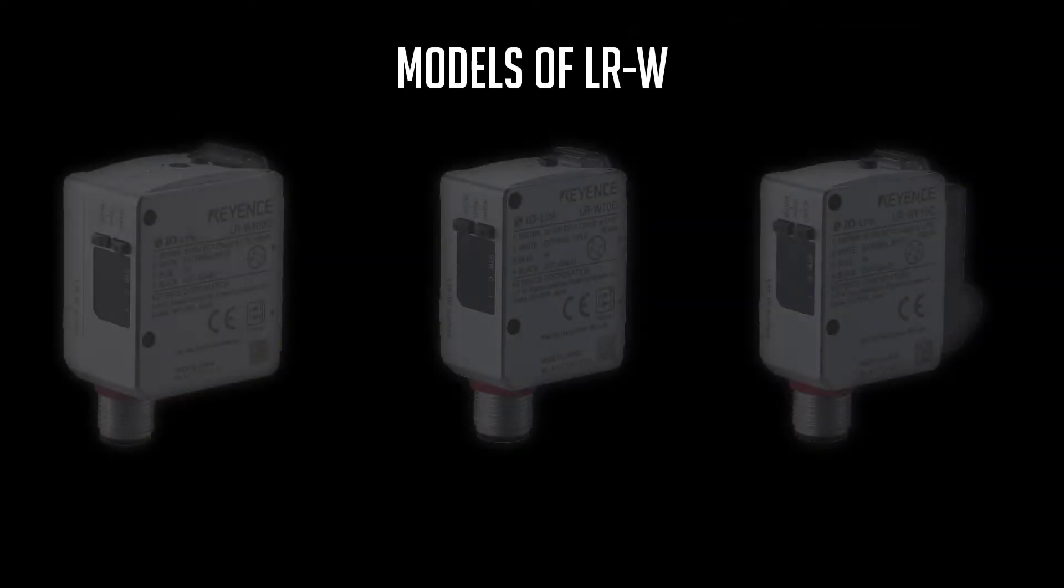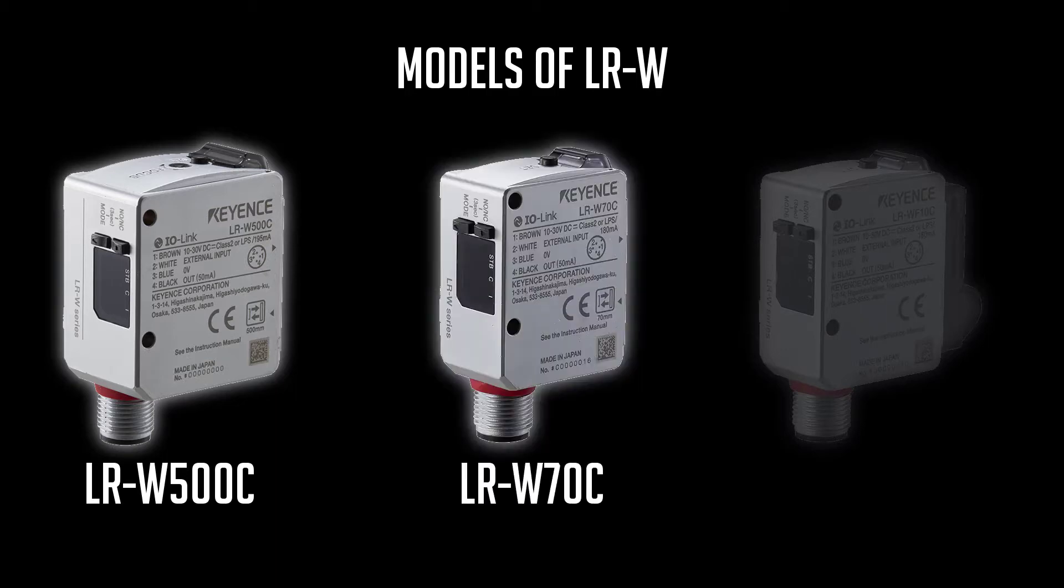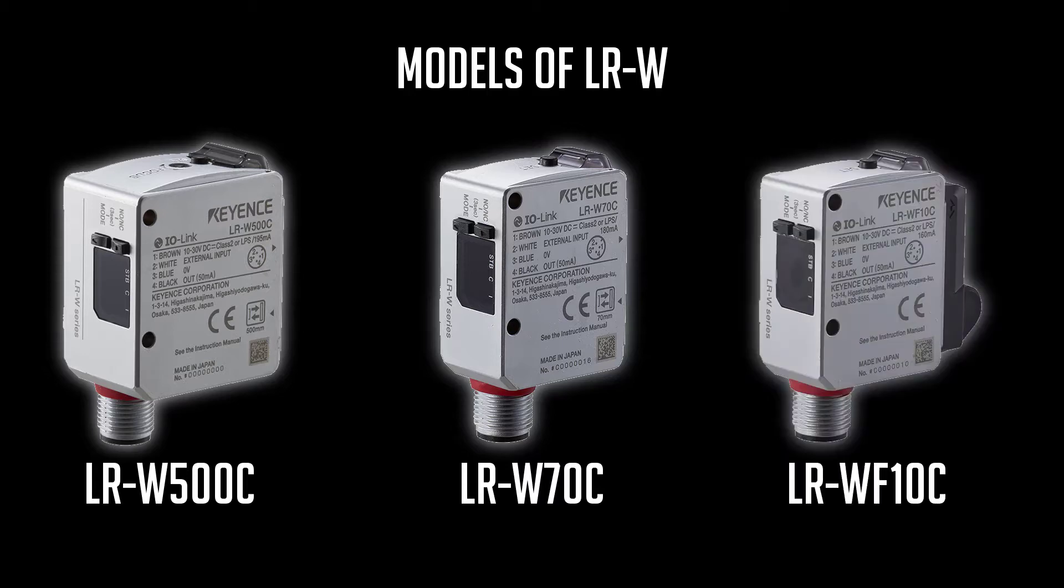There are three models of the LRW. The 500, which is a 500 millimeter detection distance along with an adjustable beam spot. The 70, which has a dual beam spot great for registration mark detection. And the F10, which is a fiber optic adapter attached to the front of the unit.